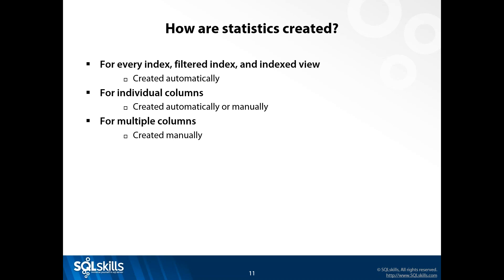For example, if an index has last name then first name, when that index is created the statistic exists for last name. But if I ever write a query with WHERE first_name = 'Aaron', it will create the statistic on that first name column automatically in the background. You can also have a statistic on multiple columns, but those are created manually using the CREATE STATISTICS command.